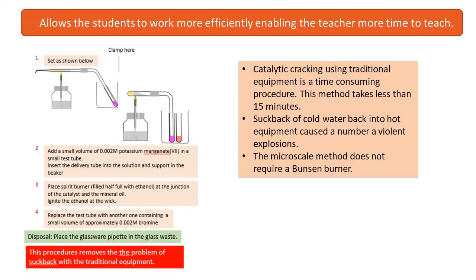In the microscale version we use a broken Pasteur pipette which we seal at the end with heat, or one of those small ignition tubes. You do not need a Bunsen — it works quite satisfactorily with a jam jar spirit burner. You can pass the gases through 0.002 M potassium manganate solution which is decolourised, or through bromine water which is decolourised as well. The whole thing took 15 minutes to set up and perform. There's no possibility of suck-back, so it's much much safer and enables the teacher time to teach in the rest of the lesson while the experiment is still fresh in the students' minds.